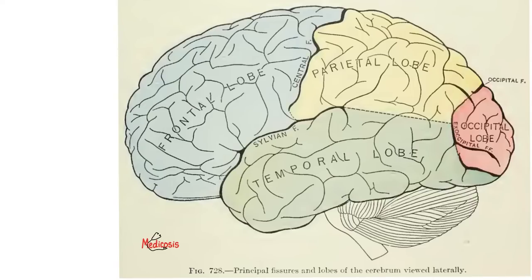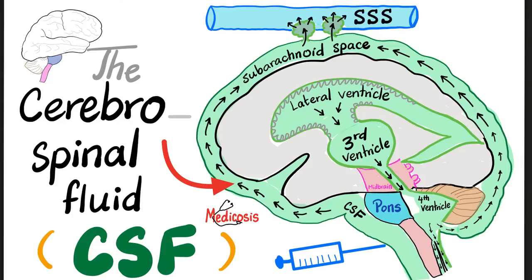This is your brain from the outside — the lateral aspect. Now let's dig deeper into the brain. You find the ventricles: this is the lateral ventricle, then the third ventricle, then the fourth ventricle. Between the lateral ventricle and the third ventricle, we have the interventricular foramen of Monroe. Between the third ventricle and the fourth ventricle, we have the cerebral aqueduct of Silvius.